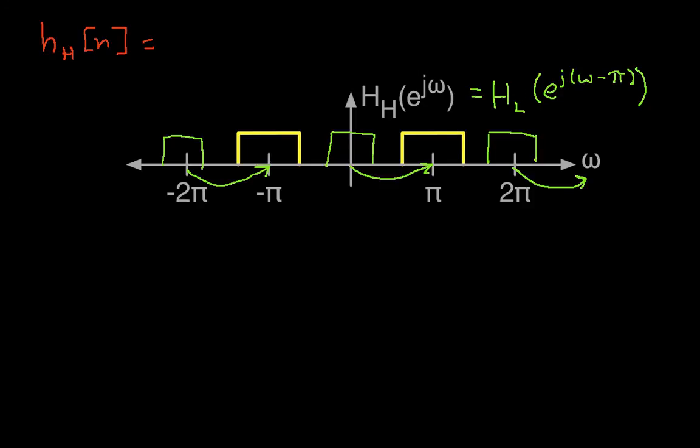Now we can use the frequency shift property of the Fourier transform, which says that a shift in frequency in the frequency domain is the same as multiplying by a complex exponential in the time domain. So we have that our h sub h of n is equal to hl of n times e to the j pi, because pi is the magnitude of the shift, times n.